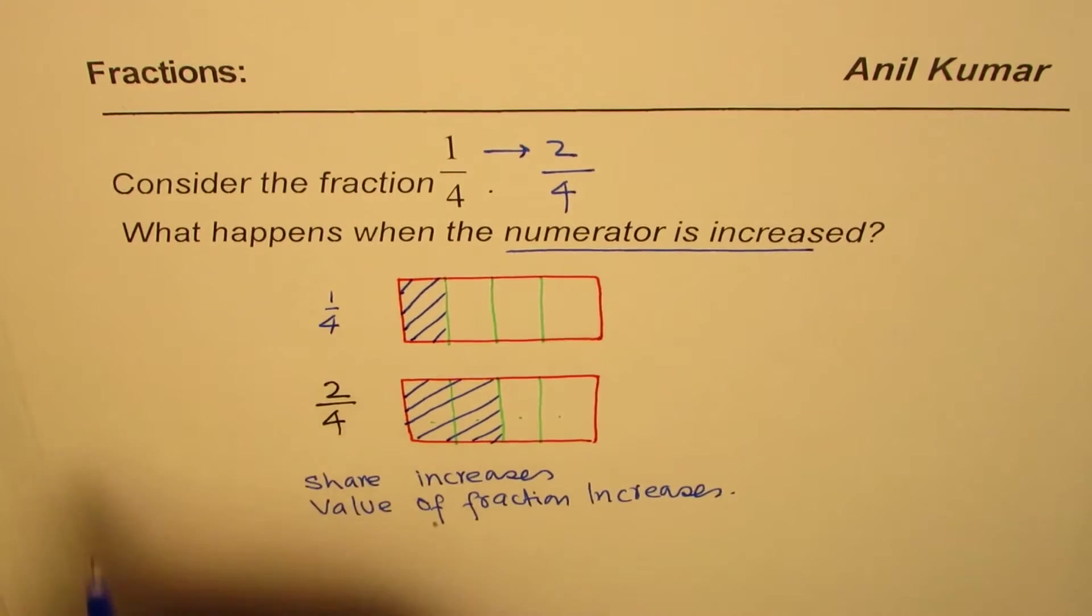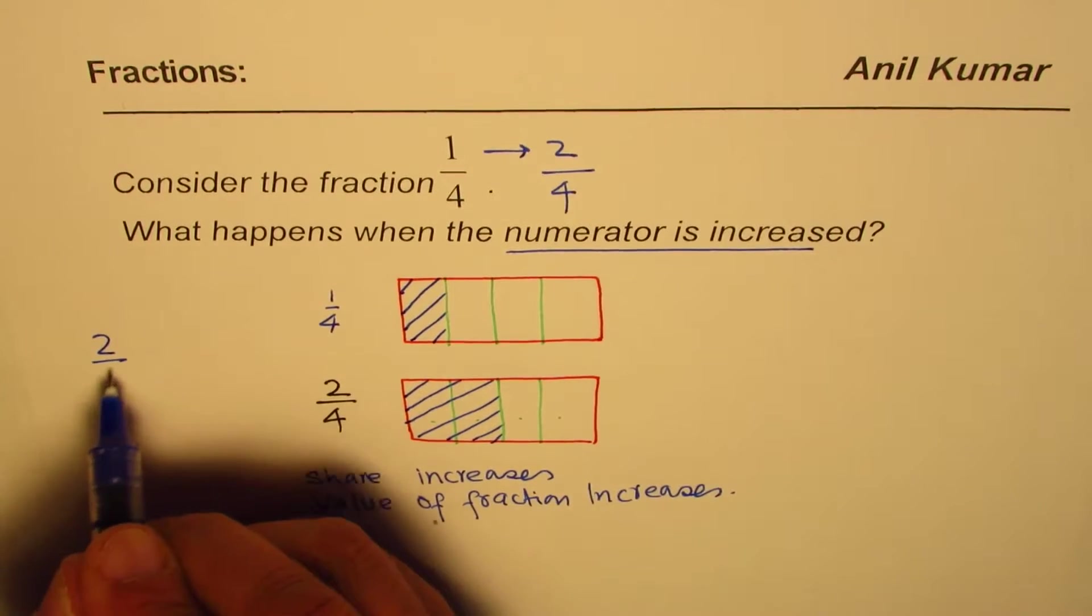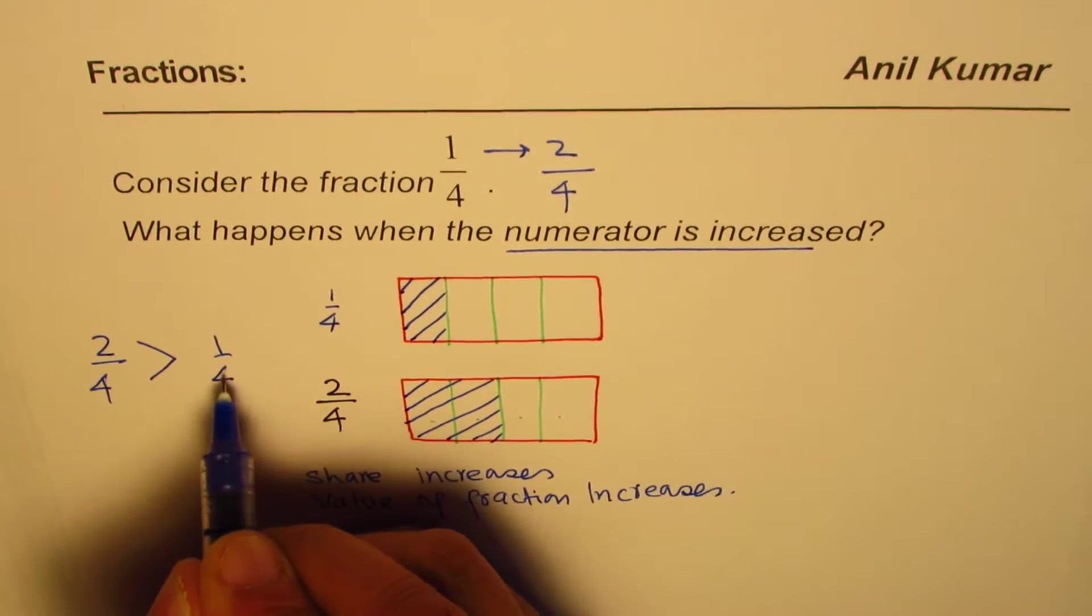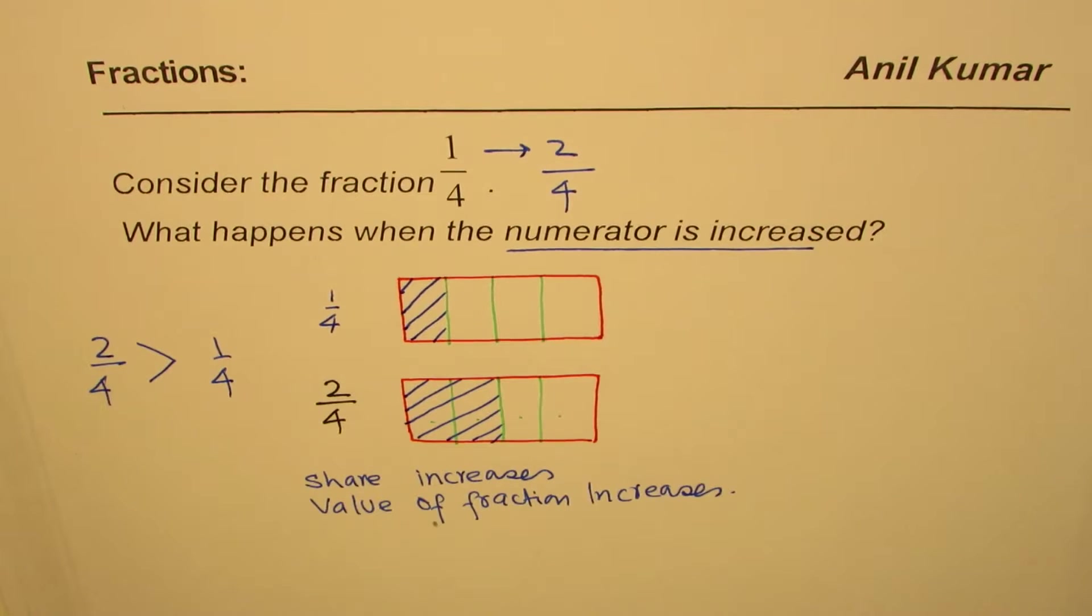So we can say that 2 over 4 is greater than 1 over 4. You get an idea, right? So that is what it is.